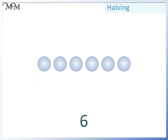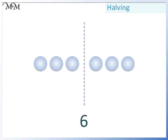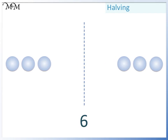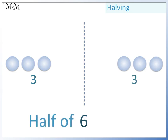Here we have six counters. To halve them we divide them into two equal parts. We have three counters on the left and three counters on the right. So half of six is three.